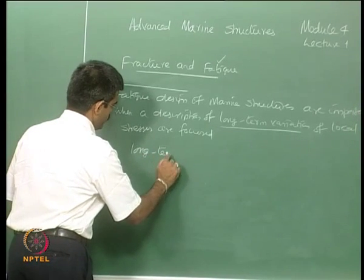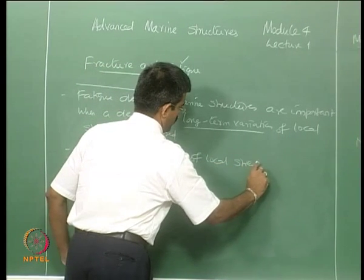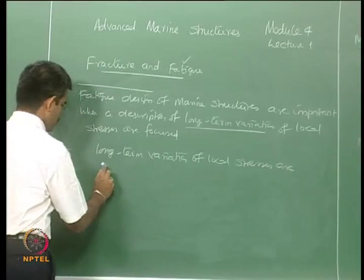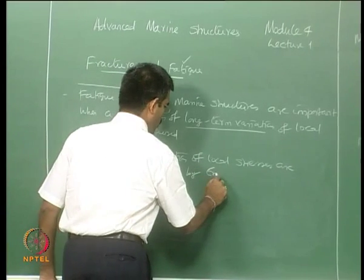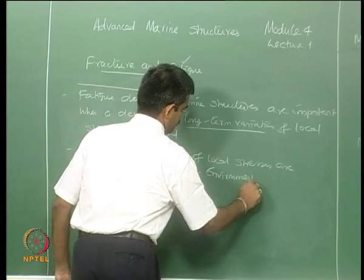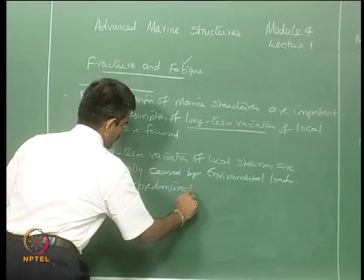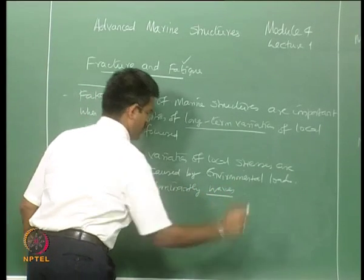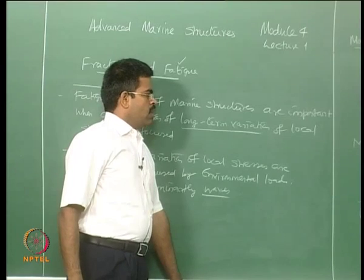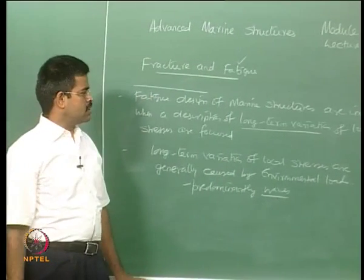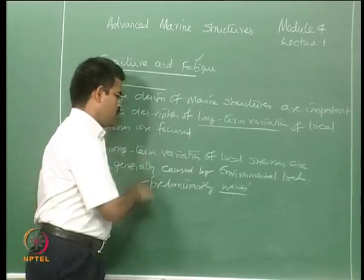Long-term variation of local stresses are generally caused by environmental loads, predominantly waves. Wind is also responsible, but for offshore structures the submerged volume of members is far higher compared to the projected area in the wind-exposed sector. So one can say that predominantly in marine structures, these are essentially caused by waves.